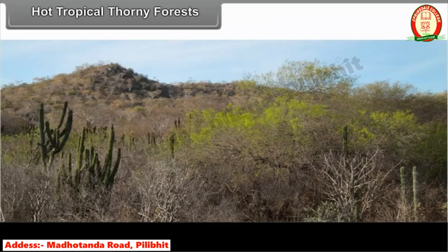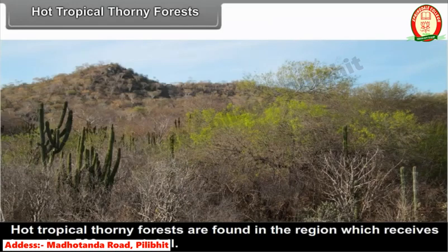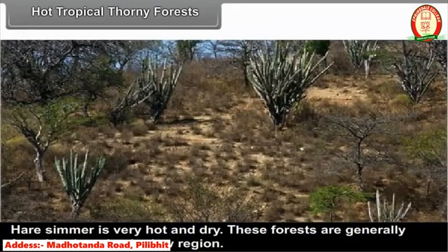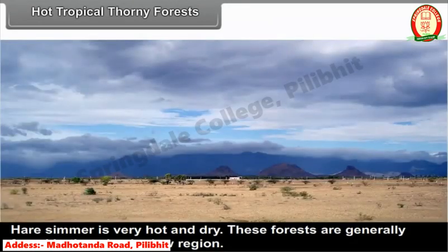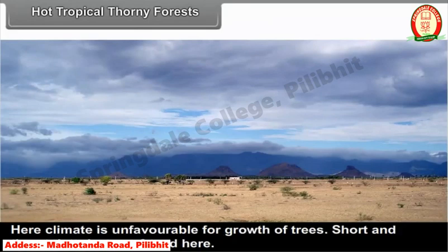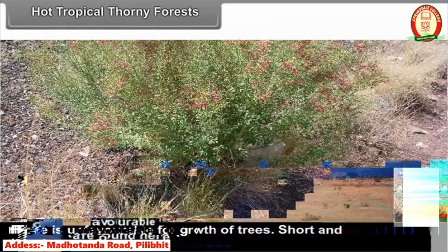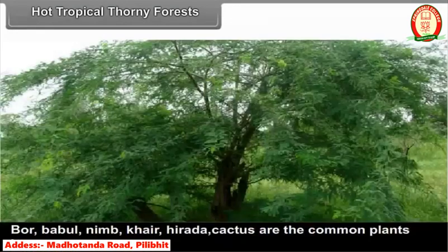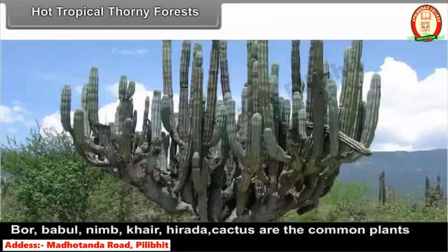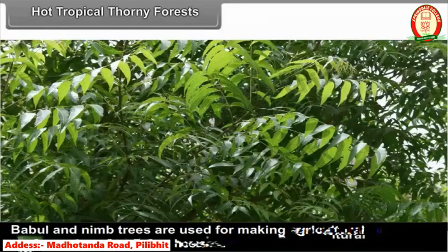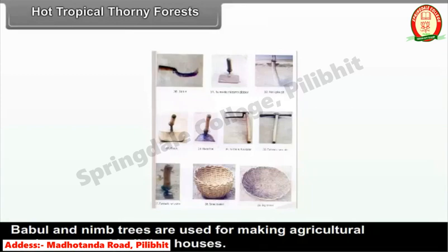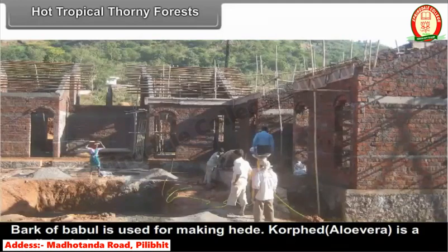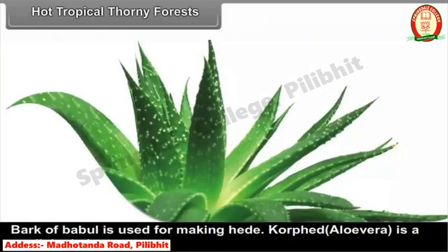Hot tropical thorny forests are found in regions receiving less than 500 mm of rainfall, where summer is very hot and dry. These forests are generally found in the rain shadow region, where the climate is very unfavorable for the growth of trees. Short and thorny brushes are found here. Bor, Babul, Neem, Kher, Herde, and cactus are the common plants. Babul and Neem trees are used for making agricultural equipment and building houses, and the bark of Babul is used for making hide. Aloe vera is also a medicinal plant found here.